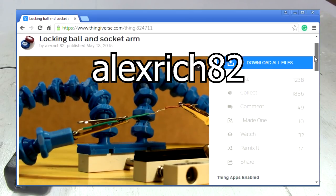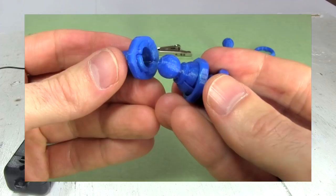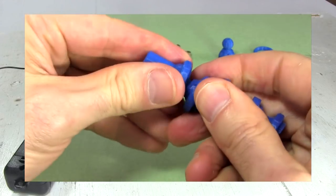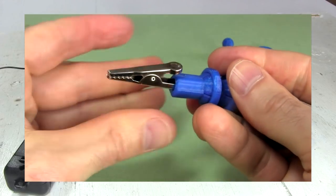I found these helping hands by Alex Rich 82 on Thingiverse. They use ball and socket joints to connect multiple pieces together. The end pieces hold alligator clips.